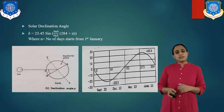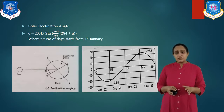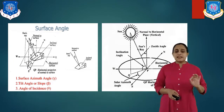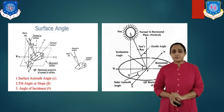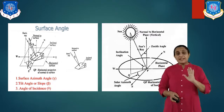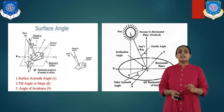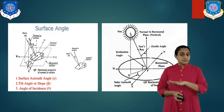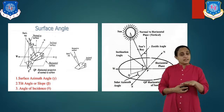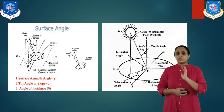The slope or tilt angle is the angle made by the plane surface with the horizontal. It is positive when sloping towards the south and negative when sloping towards the north — denoted as beta. The angle of incidence is the angle between the sun's rays on a plane and the normal to that surface. If the surface is horizontal, it is similar to the zenith angle. But if the surface is tilted, we have to calculate the incidence angle separately.